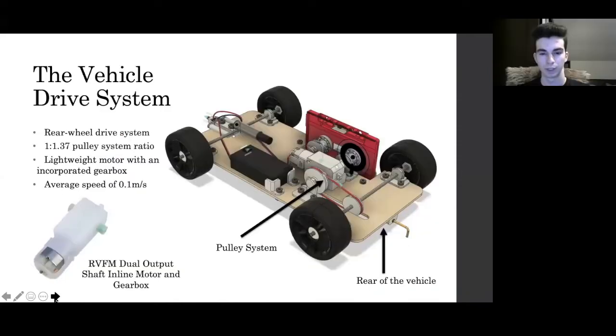Our vehicle will have a rear wheels drive system as shown here. A pulley system with a ratio of 1 to 1.37 was added to bring the RPM up to 34.25. The chosen motor provided a close output rate to the desired values for the wheels, so minimal gearing is required.